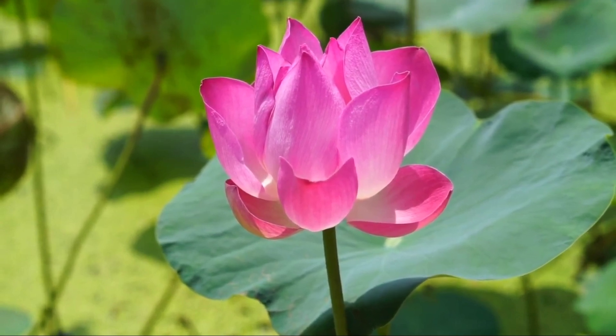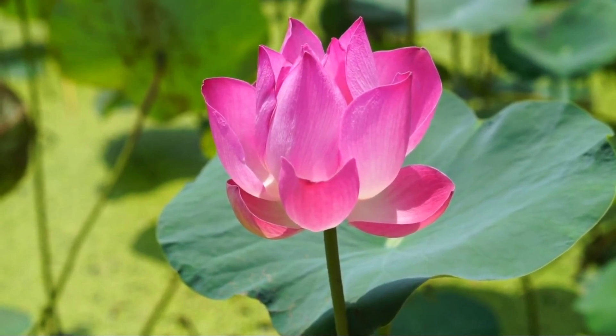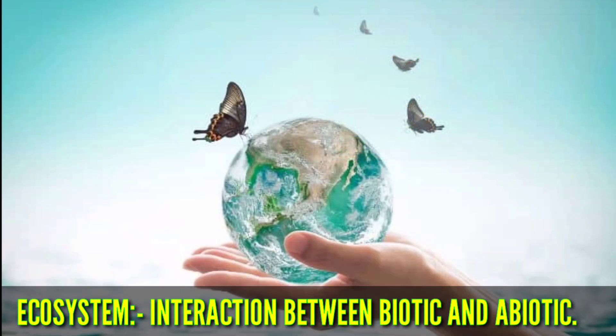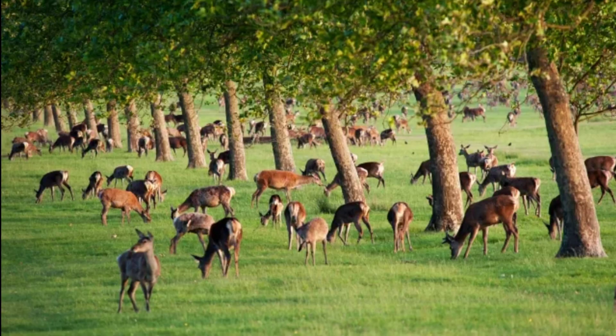Now we can define ecosystem: the interaction between biotic (living) and abiotic (non-living) is called an ecosystem. The Earth itself is a very large ecosystem. Living organisms depend upon nutrition for their survival.